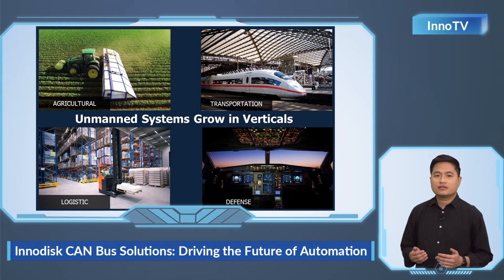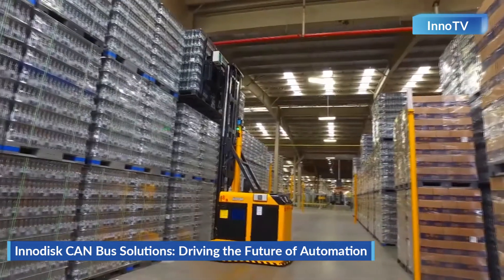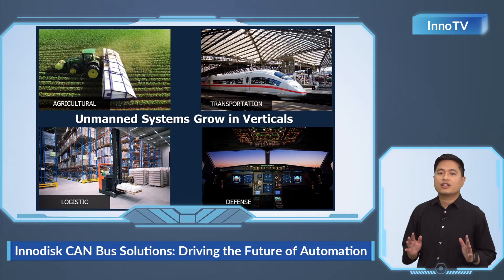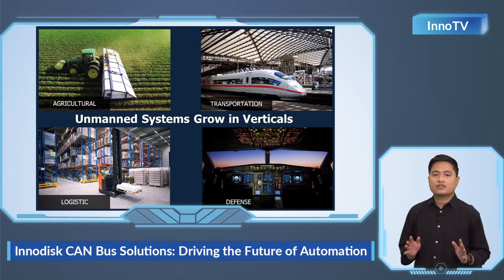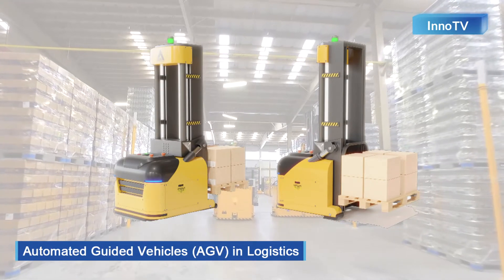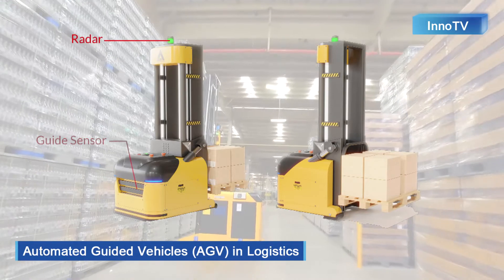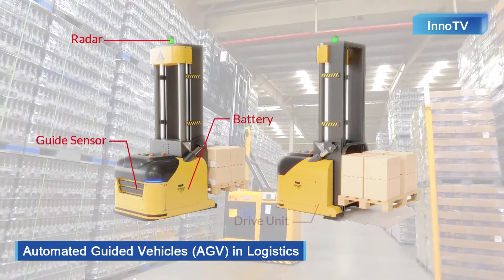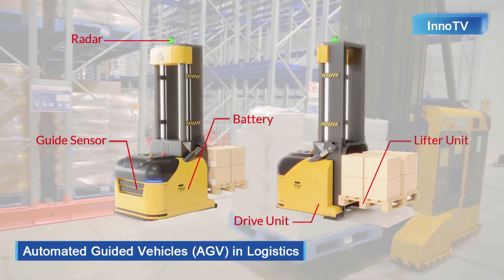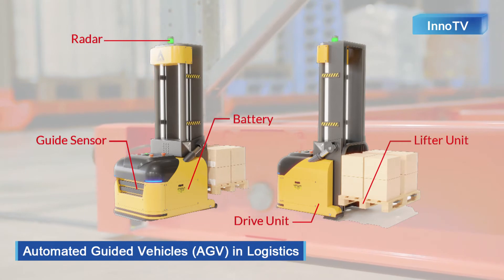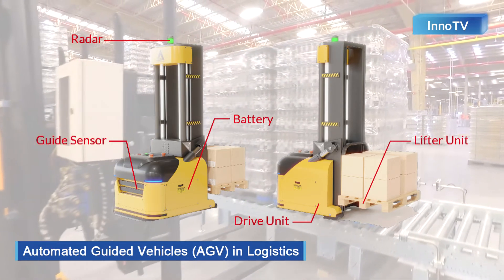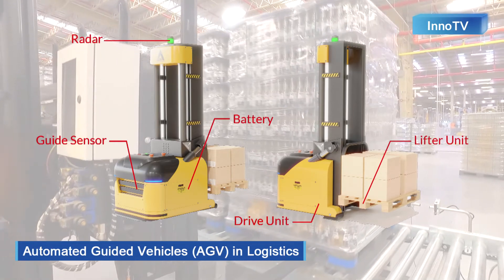We can already see unmanned systems being adopted in many industries, such as logistics, transportation, agriculture, and defense. CAN bus is widely used on these unmanned systems to connect the host and several sensors to send commands and receive data. Logistics is the most widely known application, using automatic guided vehicles, also known as AGVs, in warehouses to move different materials like pallets, rolls, racks, and carts. These AGVs, such as tractors or automatic forklifts, need to be equipped with a variety of sensors. CAN bus is used as the communication interface for infrared distance measuring devices to detect pallets, avoid crashing during navigation, and position the fork.